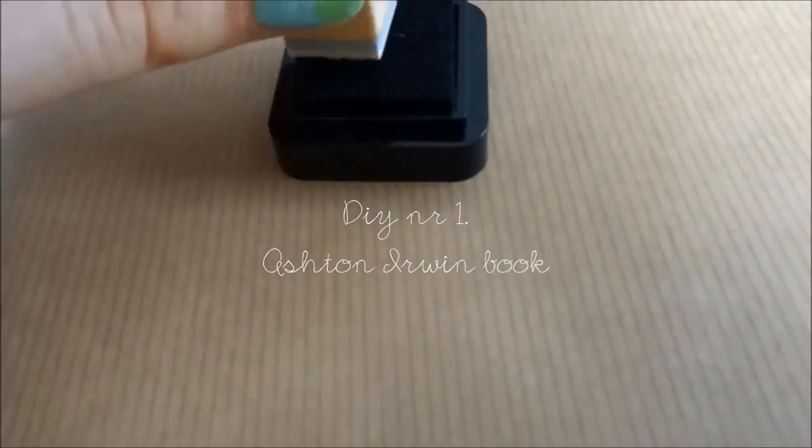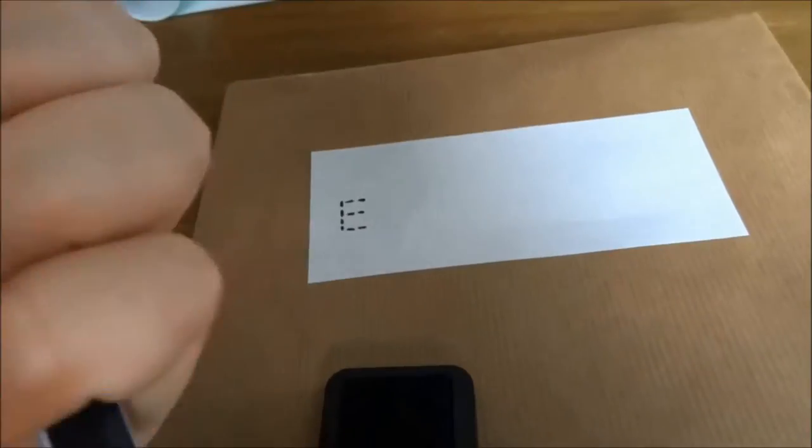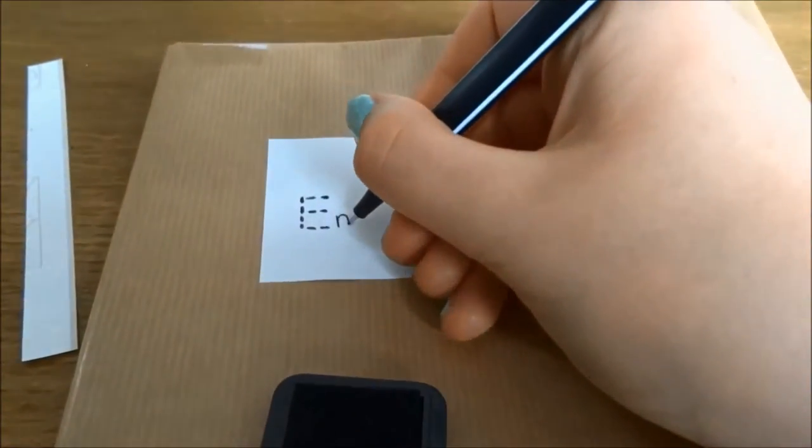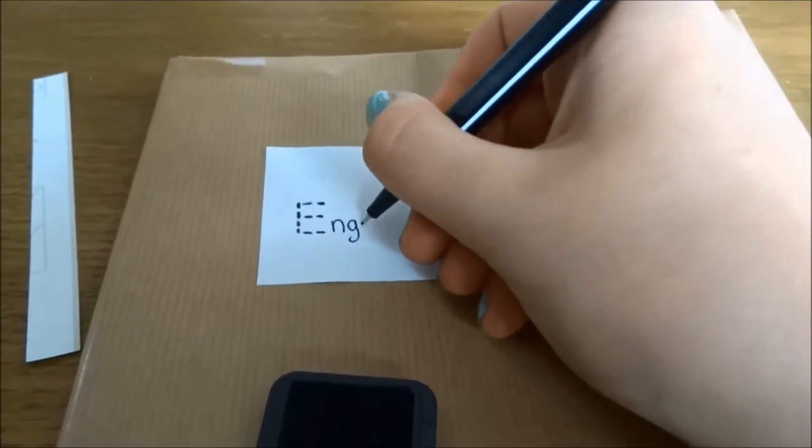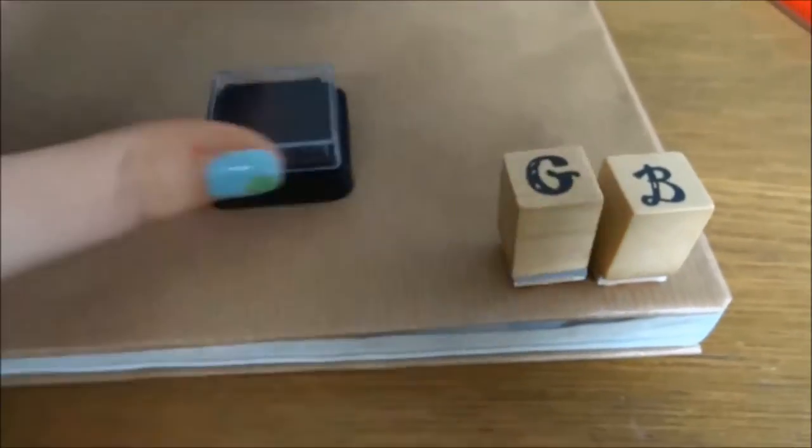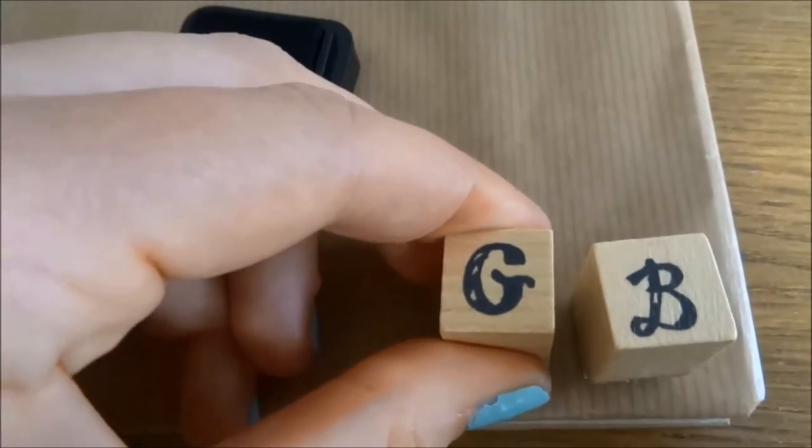The DIY number one is an Ashton Irwin inspired book. I used stamps for this one, so I started with stamping an E on it and then I wrote English on it. On the bottom of the book I decided to have the letters GB because it stands for Great Britain and that's English.